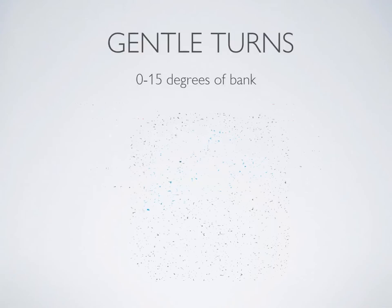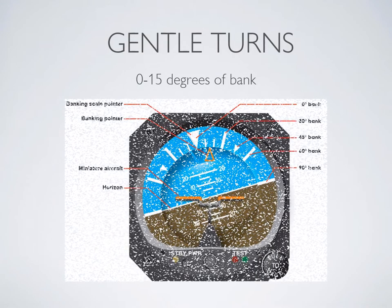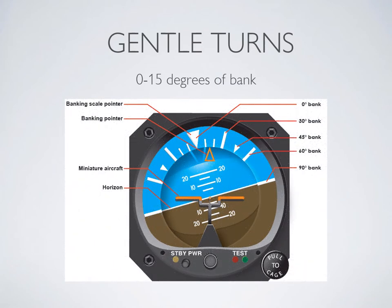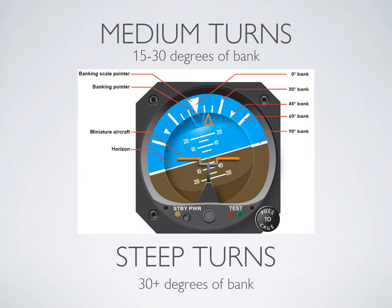The flight training manual groups turns into gentle, medium, and steep. Gentle turns have less than 15 degrees angle of bank — a really shallow angle. Medium turns are those with more than 15 but less than 30 degrees of bank, and steep turns are more than 30 degrees of bank.